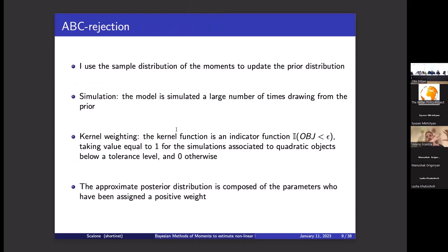The key distinction of BLEE is that it relies on asymptotic normality of moments — using this assumption to compute the likelihood. In contrast, ABC focuses on the sample distribution of moments to update the prior distribution. Let me illustrate this with an example using the simplest ABC algorithm: ABC rejection.